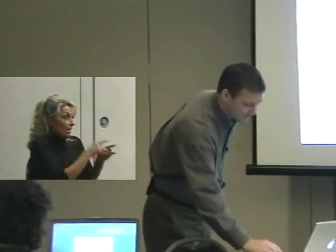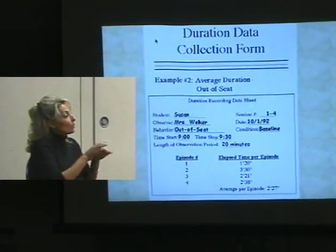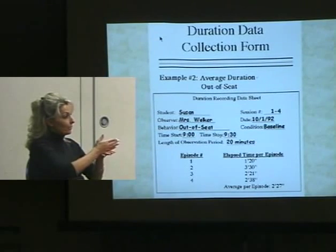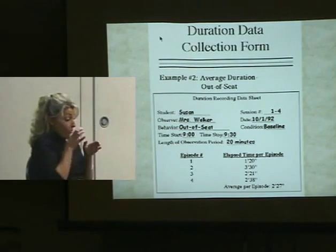Duration is not a time-based system — it's an event-based system. Just because you're using a watch doesn't make it time-based. A time-based system is when time tells you when to record. The stopwatch does your recording, but behavior tells you when to use it. I don't use duration very often — I would probably go to a time-based system instead. You could also do an average by writing down each elapsed time when the behavior stops and resetting the watch, but that's really time-consuming while you're teaching.